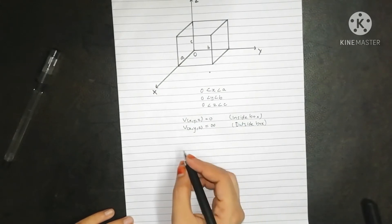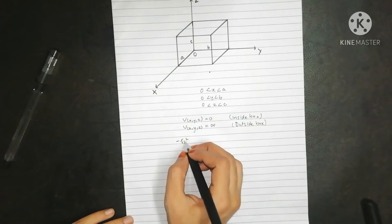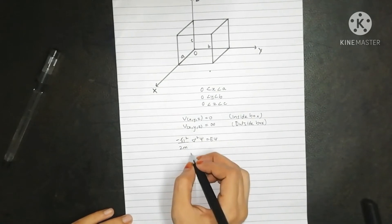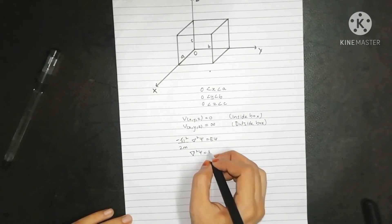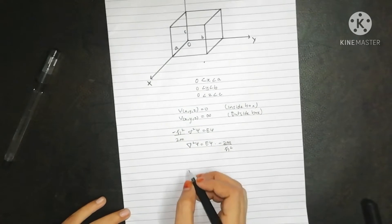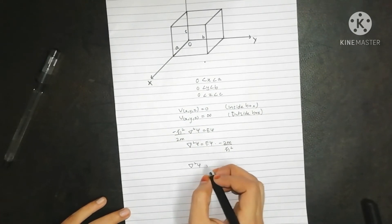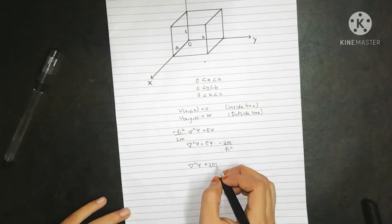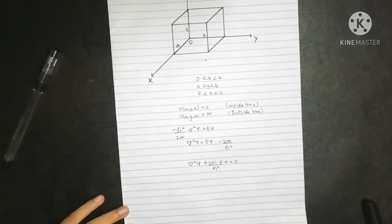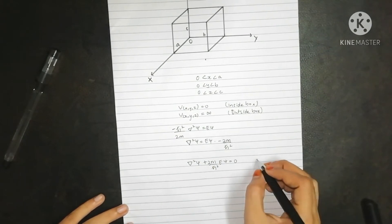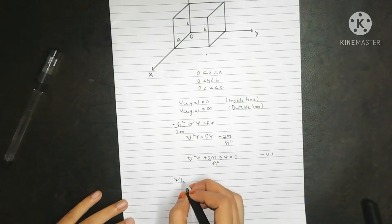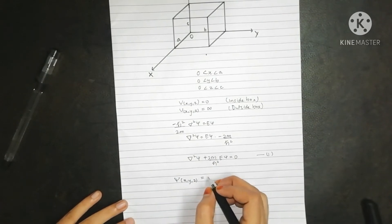The Schrödinger time-independent equation is given as: minus h-bar squared upon 2m times del-squared psi equals E·psi. This gives del-squared psi plus 2m upon h-bar squared times E·psi(x,y,z) = 0 — let's call this equation 1. The wave function psi is the product of three functions of x, y, and z.